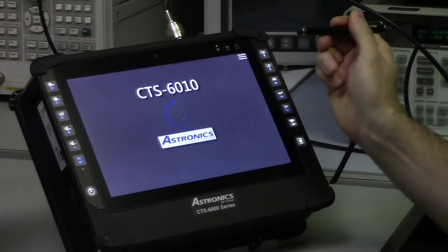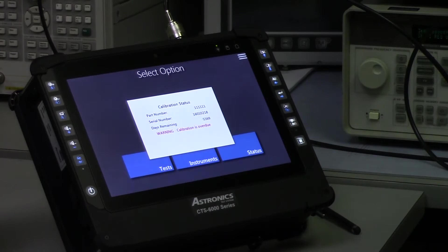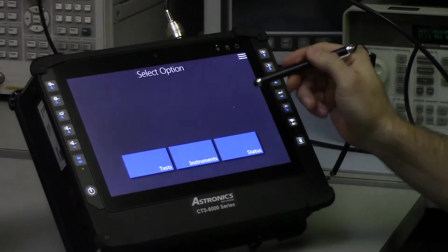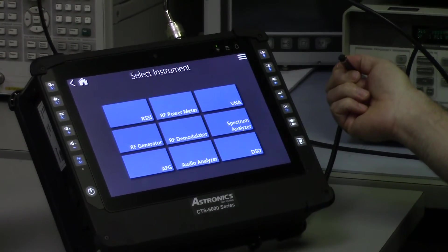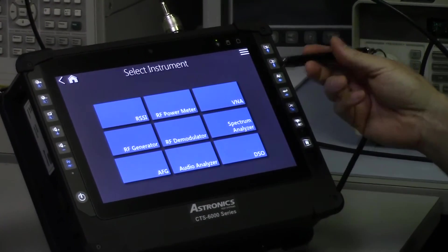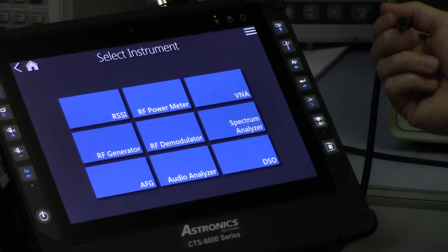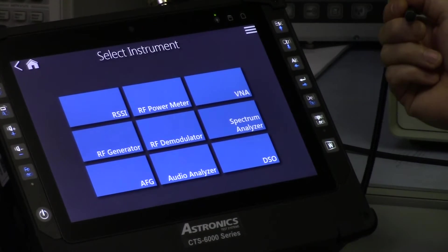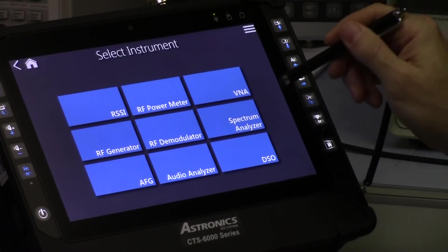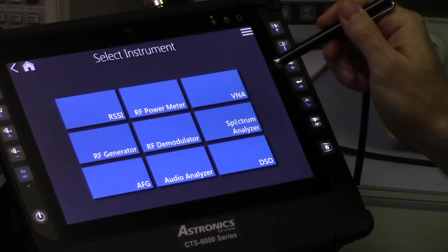And if you select manual testing, this will bring up the nine different pieces of test equipment and tells you the calibration status of the unit. We have an RSSI, RF power meter, network analyzer, RF generator, RF demodulator, spectrum analyzer, audio function generator, audio analyzer, and oscilloscope. And for demonstration purposes, I will select the spectrum analyzer.